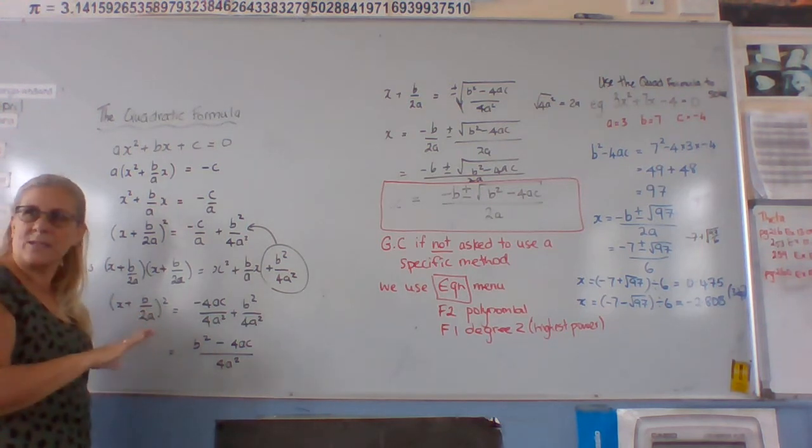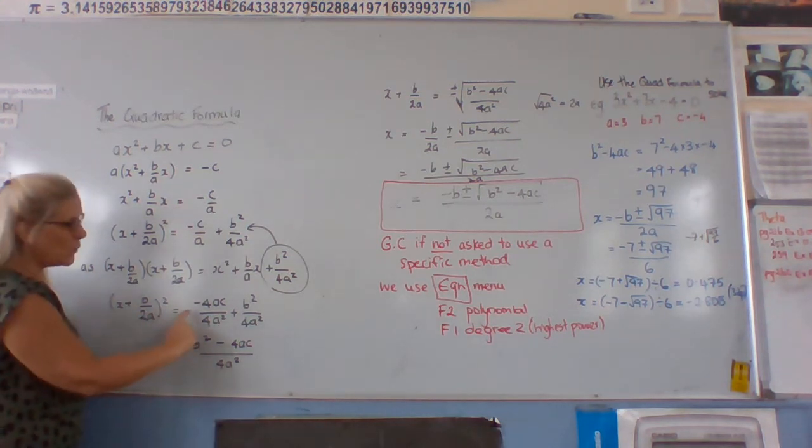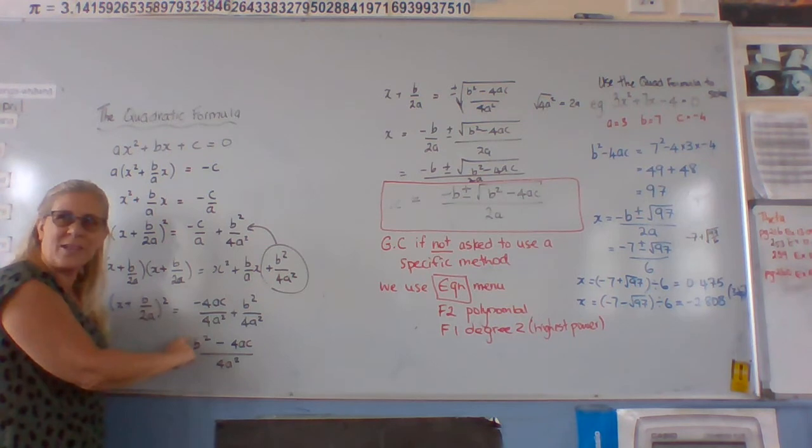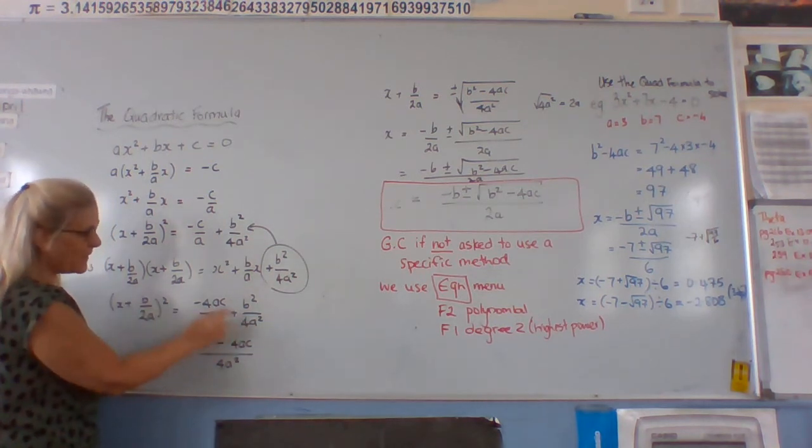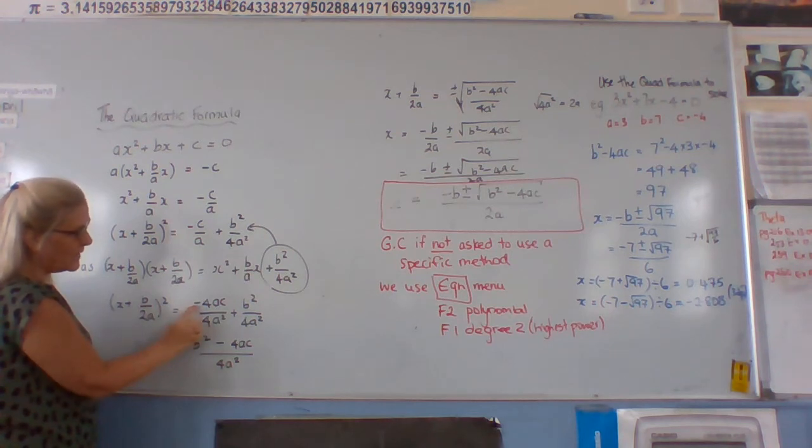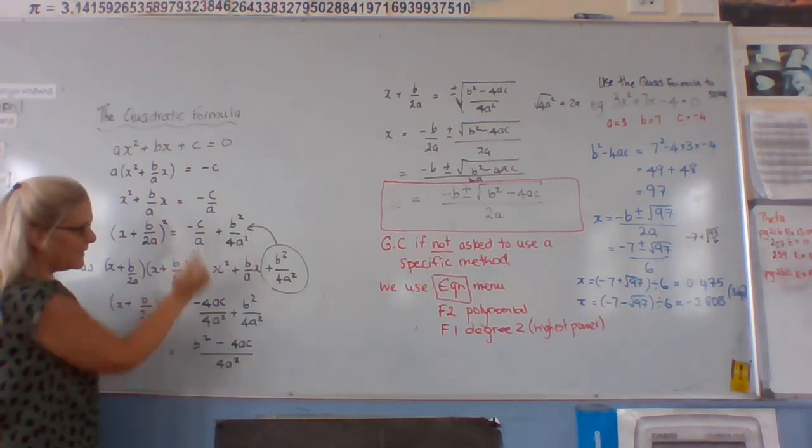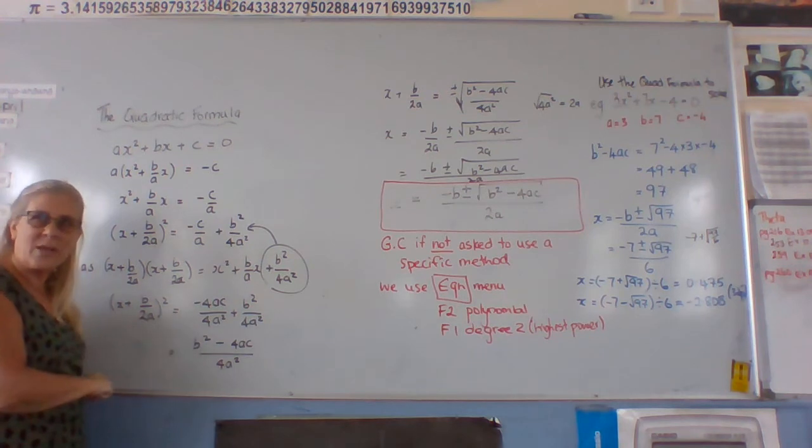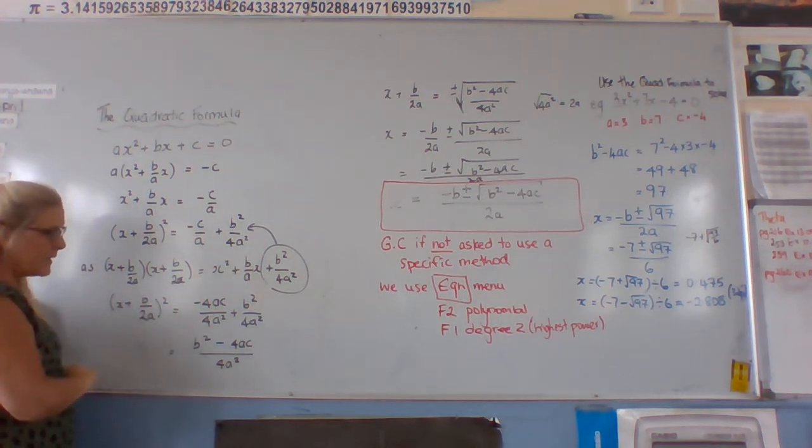What we need to do is think about common denominators. So we've got a common denominator of 4a squared. So this one here has to be multiplied by 4 and a. So we've got negative 4ac, so negative 4ac plus b squared all over 4a squared.